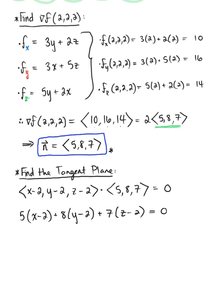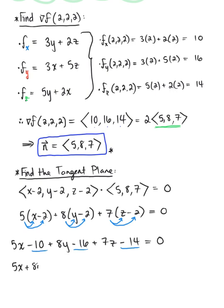We distribute each coefficient through to each term, then group like terms. We have 5x - 10 + 8y - 16 + 7z - 14 = 0. Notice we have three like terms: -10, -16, and -14. This gives us 5x + 8y + 7z - 40 = 0.